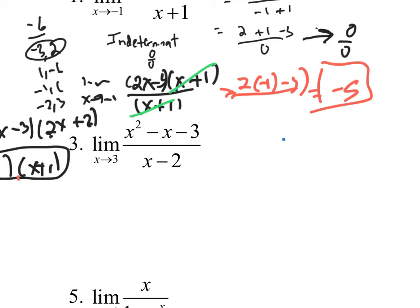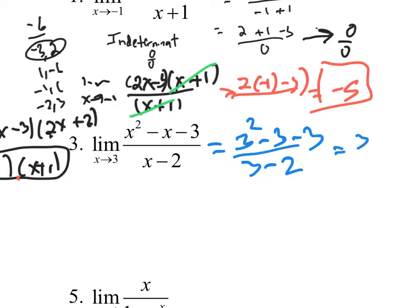Let's do another one — we're approaching 3. Plugging in a 3: 3 squared minus 3 minus 3 over 3 minus 2. That's 9 minus 3 is 6, minus 3 is 3, over 1. The answer is 3. So do I use L'Hôpital's Rule? No — it won't work anyway, because it's not indeterminate. That's the secret — don't get fooled.